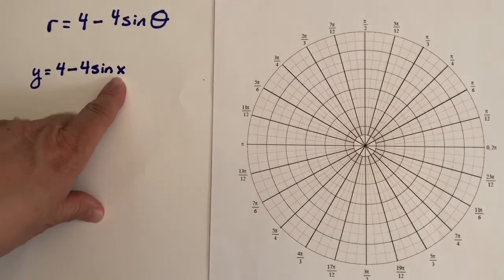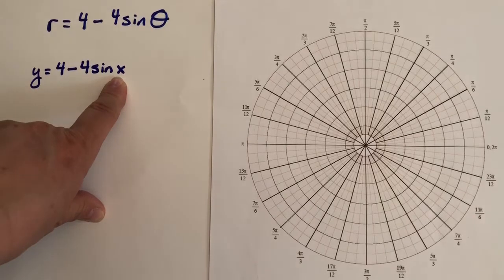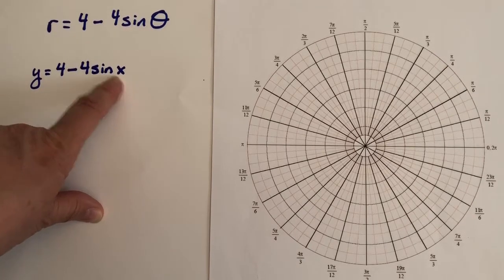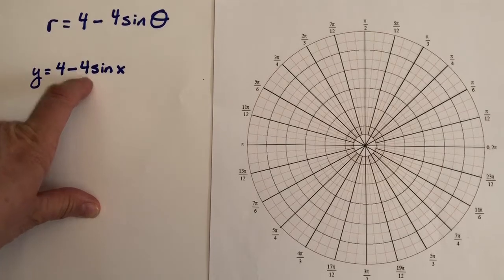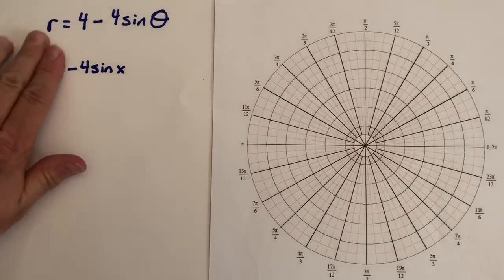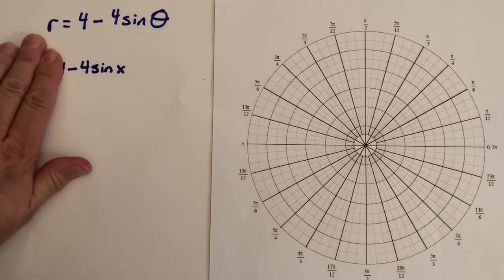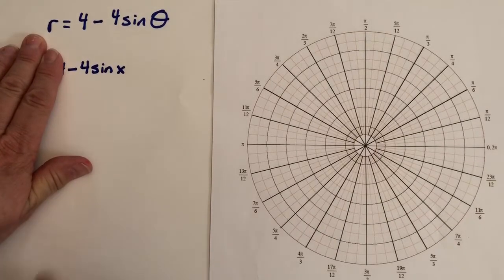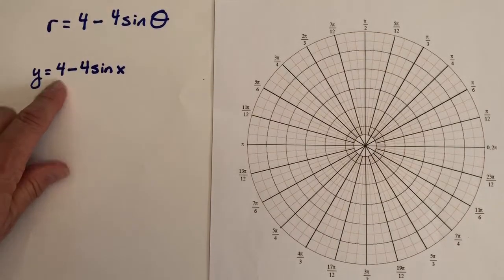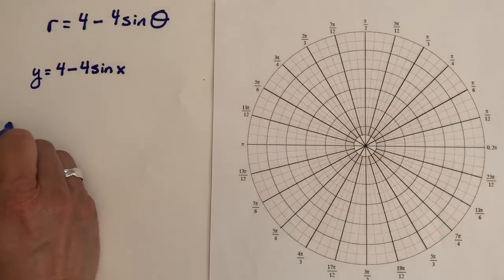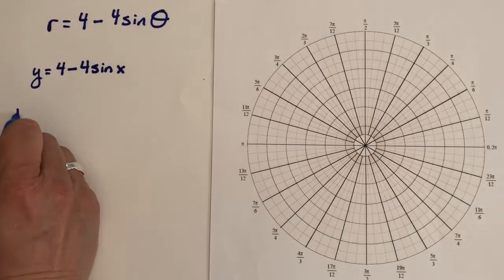Notice the period has not been changed — we will have a period of 2π. The amplitude will be 4, going up 4 and down 4. But there is a reflection, and we do have a vertical shift up 4 units. So let's sketch that curve.